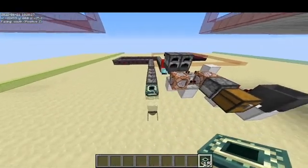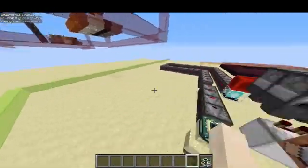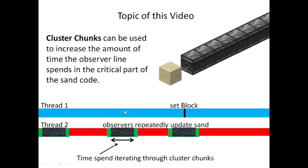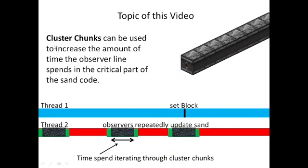Those are the normal falling block swap chances on my computer. Now let's find out what cluster chunks are and how we can improve these chances. Cluster chunks allow us to slow down the thread running the observer line while it's in the middle of the sand code. This makes the window in which the falling block swap can occur much larger, giving us a much better chance of hitting that window.